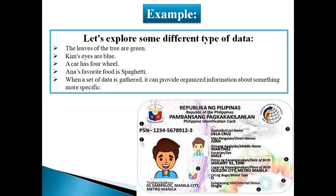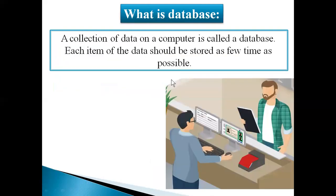People who use computers often use the words 'information' and 'data' in the same way. In the 1970s, computer scientists gave new meanings to these words: 'data' means information that has not yet been checked, and 'information' means data that has been checked and can be trusted. So in simple words, a collection of data on a computer is called a database.